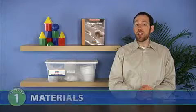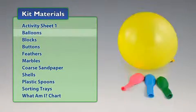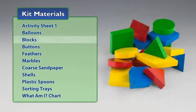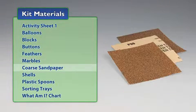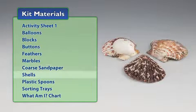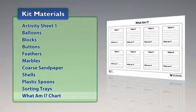You will need the following materials from the kit: Activity Sheet 1, balloons, blocks, buttons, feathers, marbles, coarse sandpaper, shells, plastic spoons, sorting trays, and the chart What Am I?